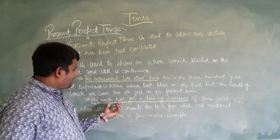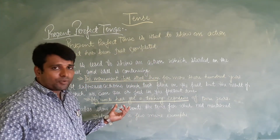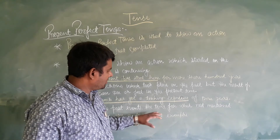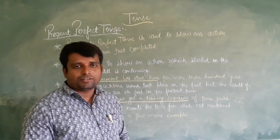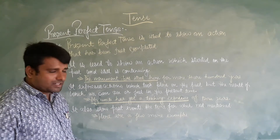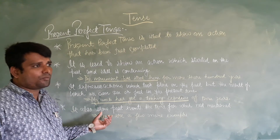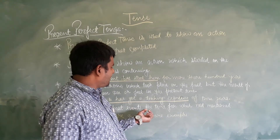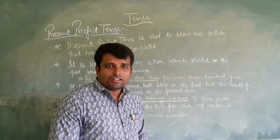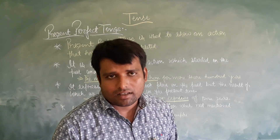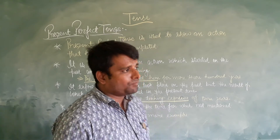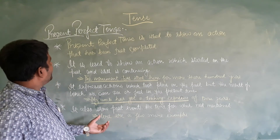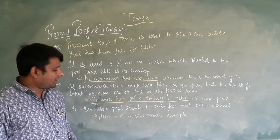Present perfect tense also shows past events, the time for which is not mentioned. भूत काल की घटनाओं को भी बताता है जिसका समय mention नहीं किया गया रहता है। ऐसी चीजों को बताने के लिए भी present perfect tense का पrayog किया जाता है।